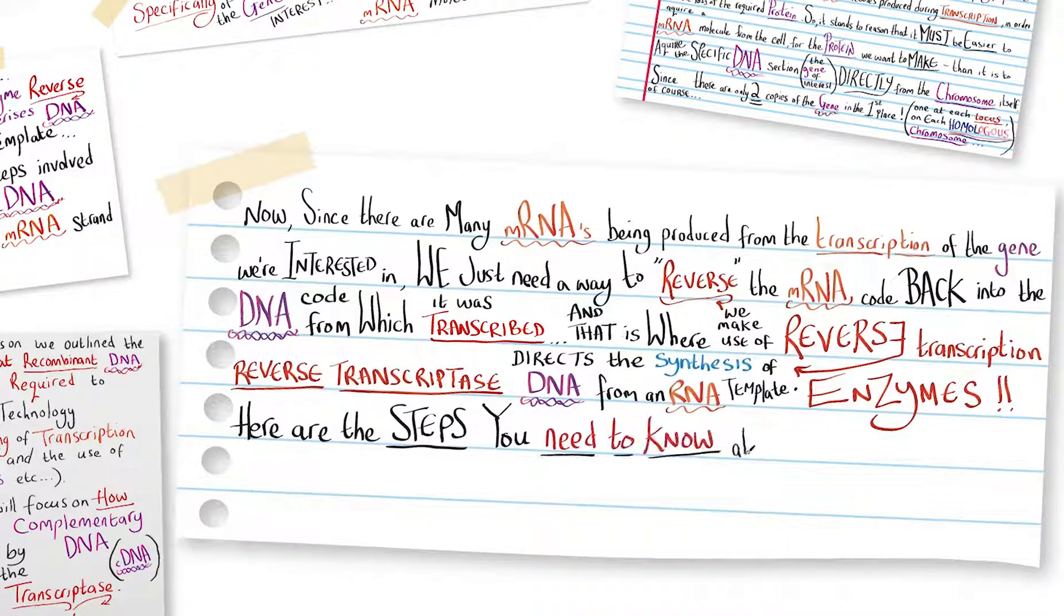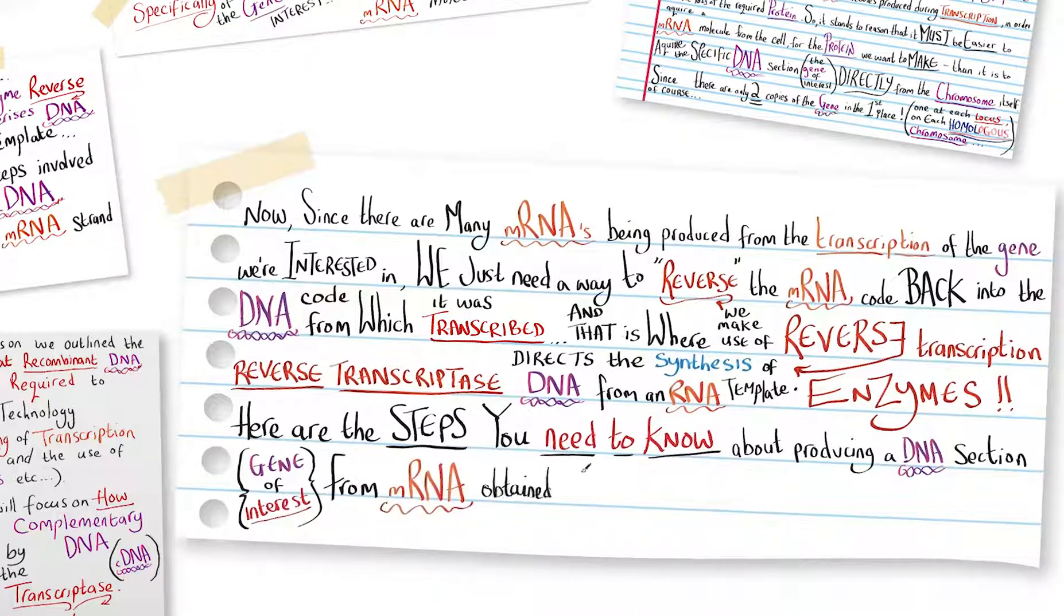Here are the steps you need to know about producing a DNA section, gene of interest, from messenger RNA obtained from cells producing a protein we want to make.